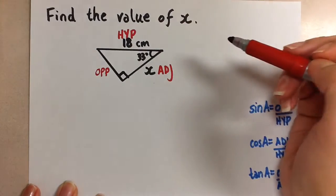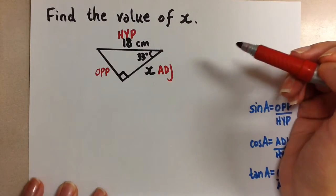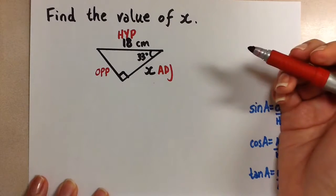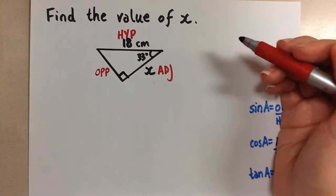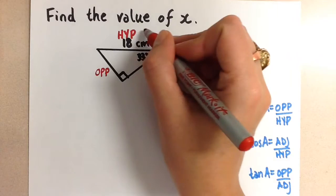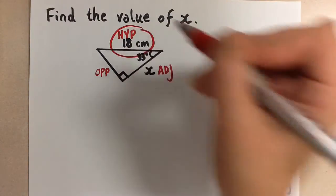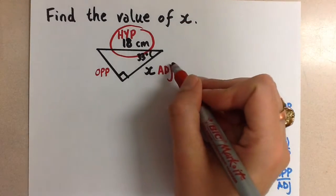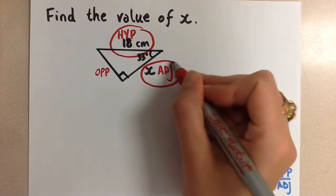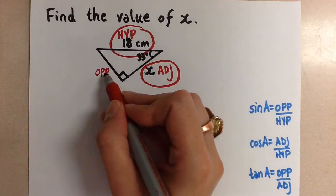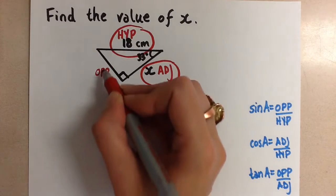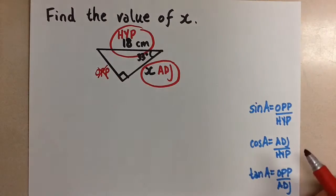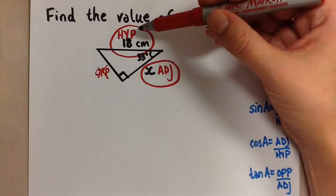Now that we've labeled the three sides of the triangle, we're going to look at what's given to us in the problem. So in this problem we see that the hypotenuse is 18 centimeters and the adjacent side is x, we're going to use that in the problem, but we're given no value on the opposite side. So we're not going to use that in this problem. We're only using the adjacent side and the hypotenuse side.